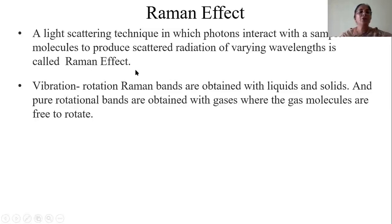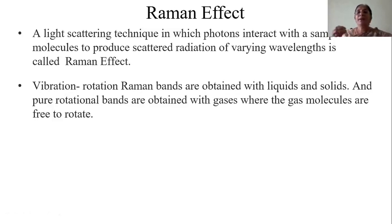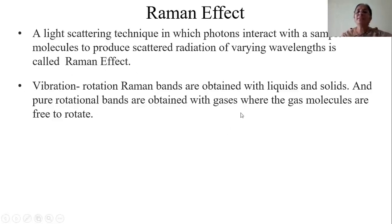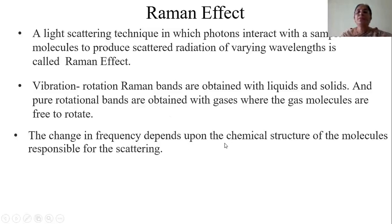When the Raman Effect was studied, it was found that vibration and rotation Raman bands are obtained with liquids and solid substances, while rotational bands are obtained with gases where the gas molecules are free to rotate. When the scattered light is studied, some bands are vibrational, some are vibrational and rotational, and some are purely rotational bands. Liquids and solids usually give rise to vibration-rotation Raman bands, while gases give rise to only pure rotational bands. The change in frequency depends on the chemical structure of the molecules responsible for scattering.